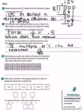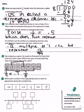Number 6. Raj is playing a game. He needs to find pairs of cards that have the same value. Which two pairs of cards does Raj have that express the same value? The pairs of cards we have are seven ninths and 0.7 repeating are the same, and three eighths and 0.375 are the same.